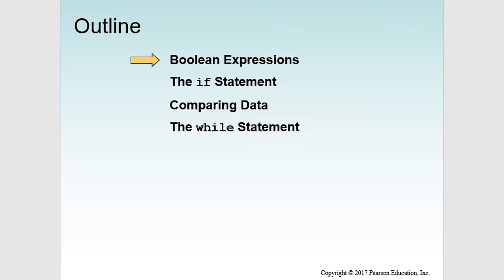These programming examples are going to focus on Boolean expressions and the if statement. A Boolean expression is an expression that evaluates to a Boolean value — either true or false — and we can use that expression to make decisions in our program. A Boolean expression is going to use relational operators, equality operators, and logical operators.